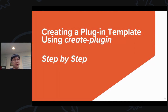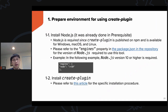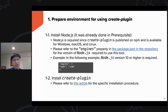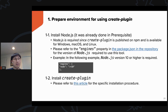Let's talk about how to create a plugin template using the create-plugin library in detail. First, you need to prepare the environment. It's important that you install Node.js, since create-plugin is an npm package. It is available on Windows, macOS, and Linux. Please refer to the engine property inside package.json in the repository for the required Node.js version. Make sure your Node.js is equivalent to or above the version mentioned there. Once Node.js is installed, install the create-plugin library by following the article link provided.